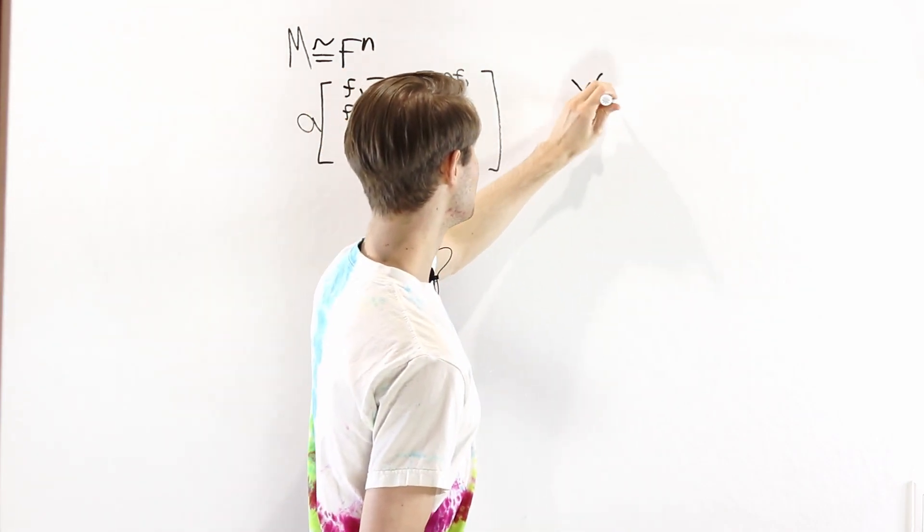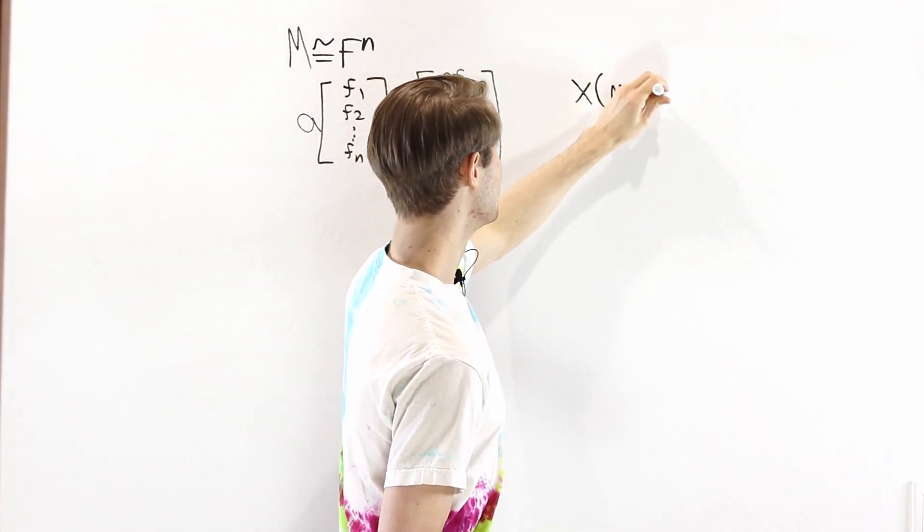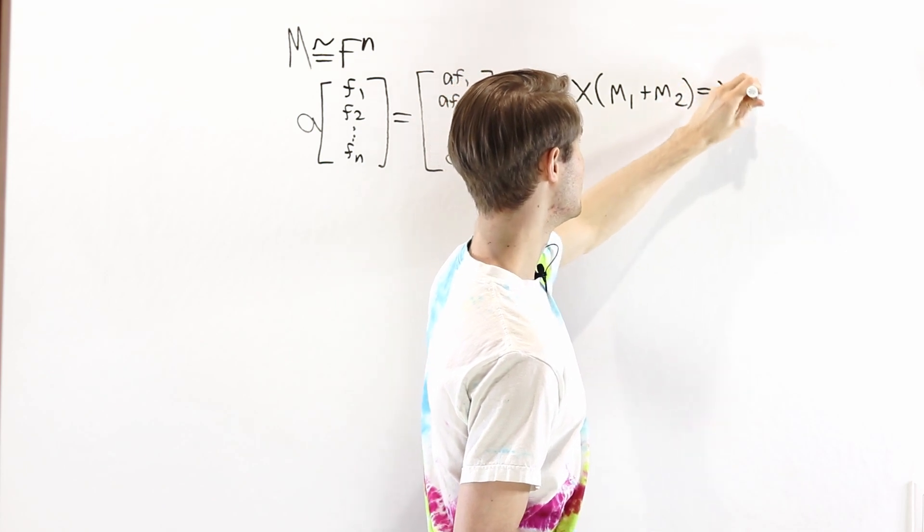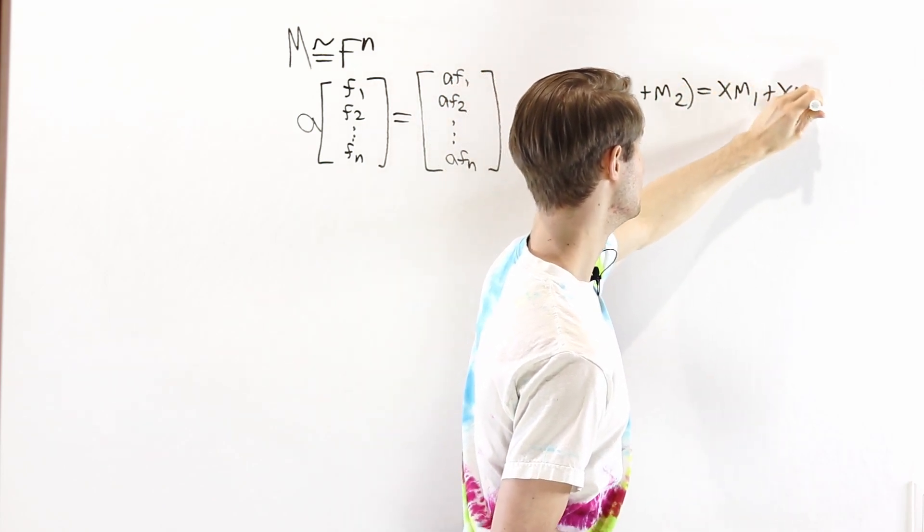First of all, one of the module axioms is that x times (m1 plus m2) is equal to xm1 plus xm2.